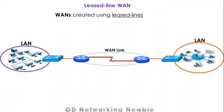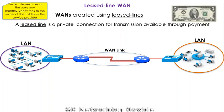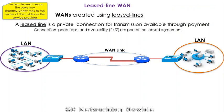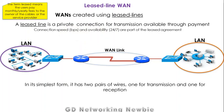Now, a leased line WAN is a WAN created using leased lines. A leased line is a private connection for transmission, available through payment. The term leased means users pay monthly or yearly fees to the owner of the cables, or the service provider. The connection speed as well as 24/7 availability are part of the leased agreement. These leased lines work in full duplex mode, meaning organizations can transmit and receive at the same time. In their simplest form, leased lines have two pairs of wire — one pair for transmission and one pair for reception.